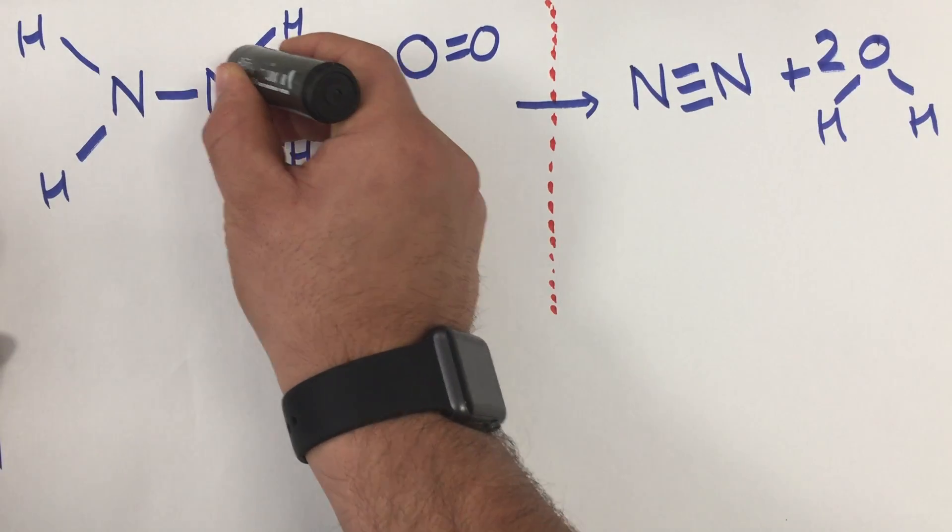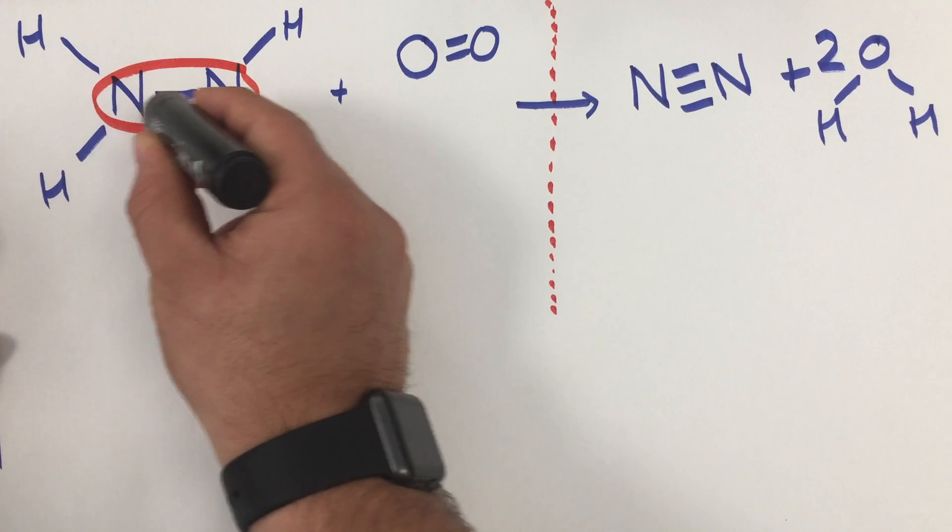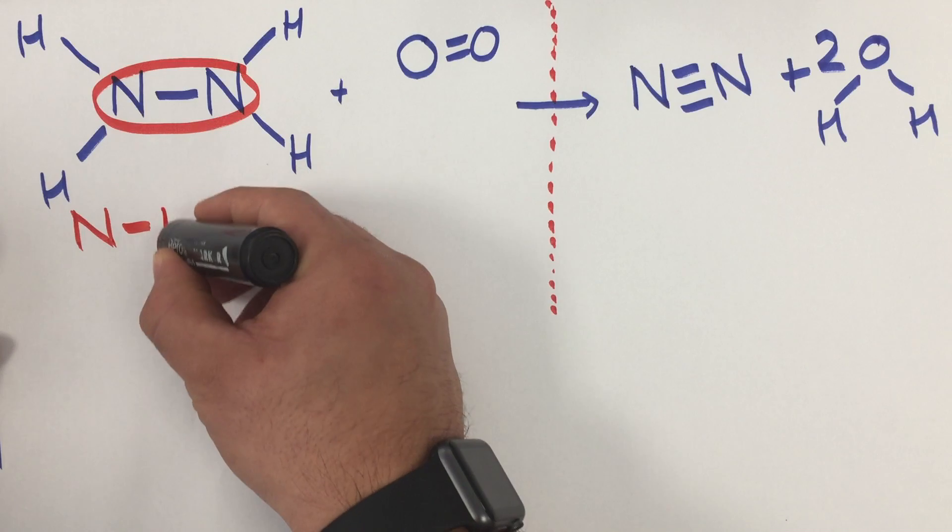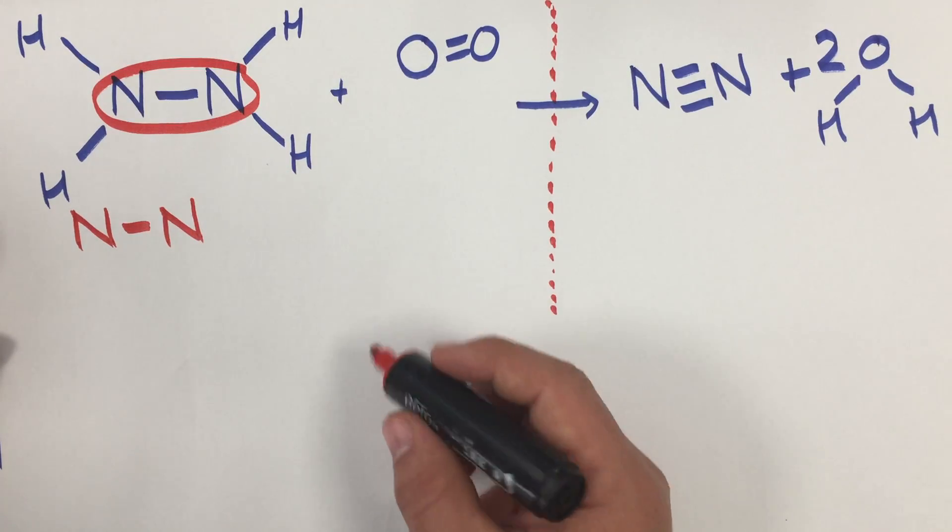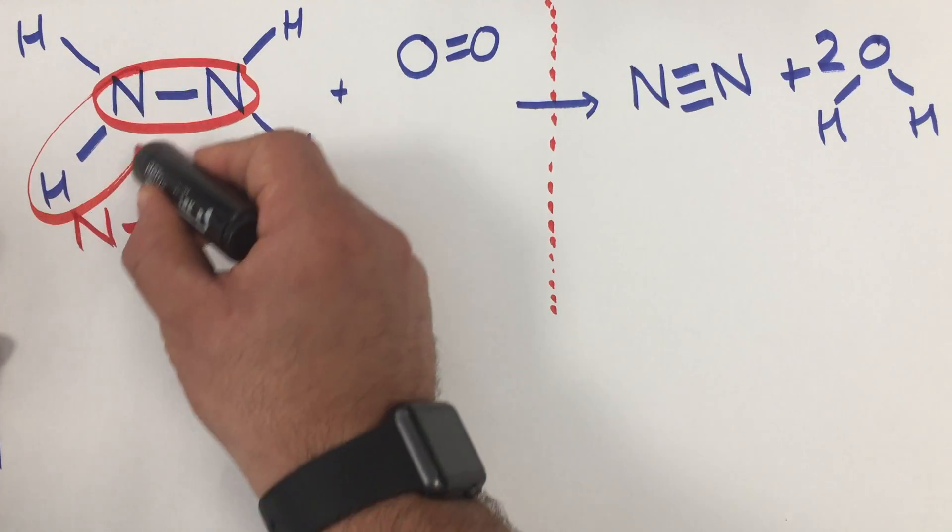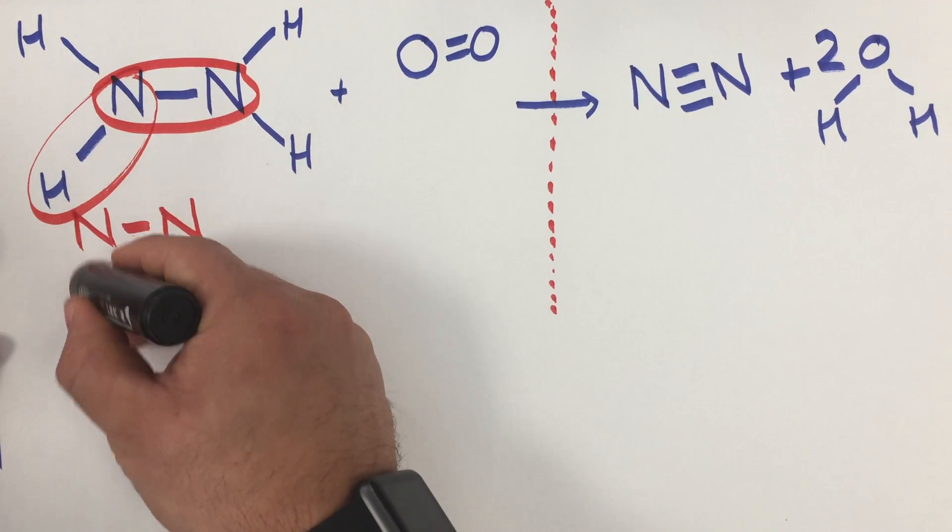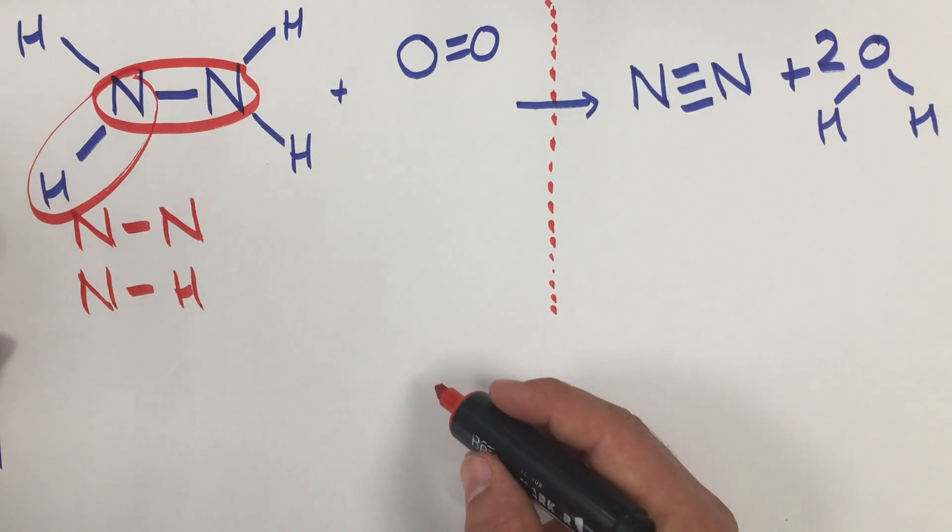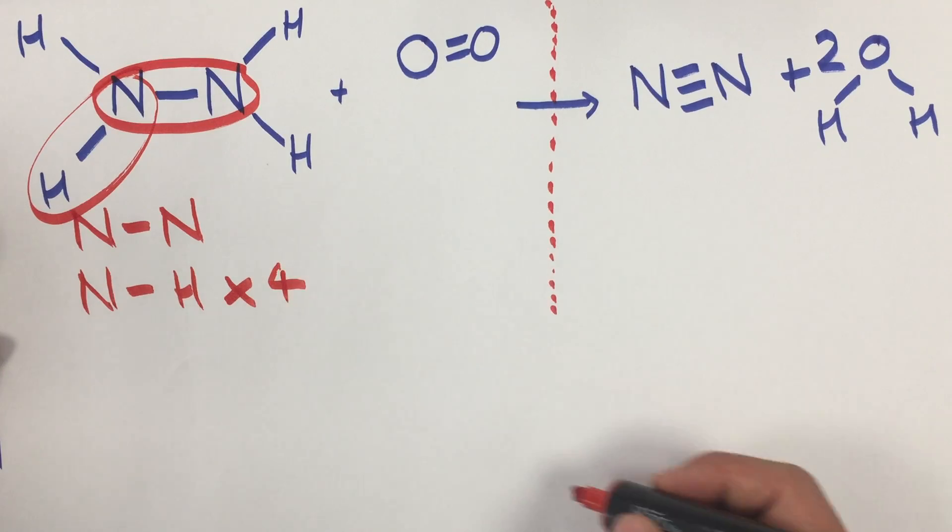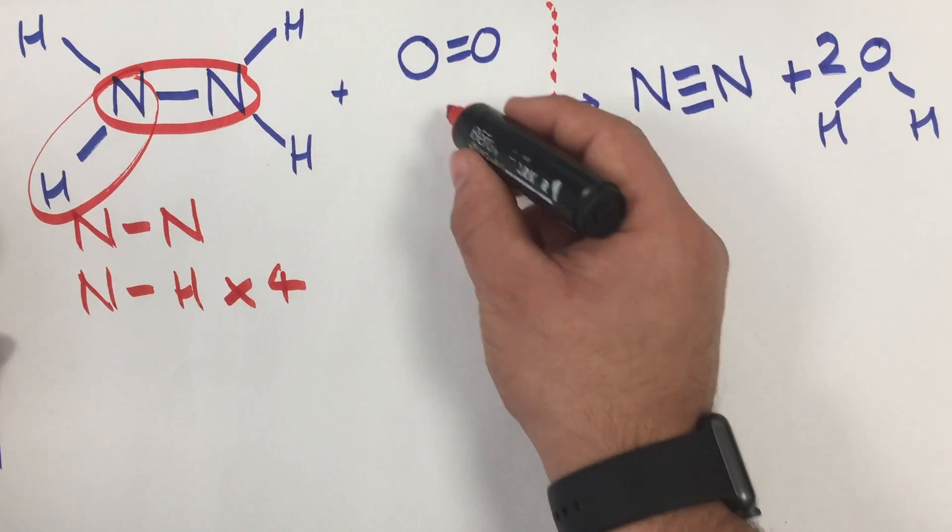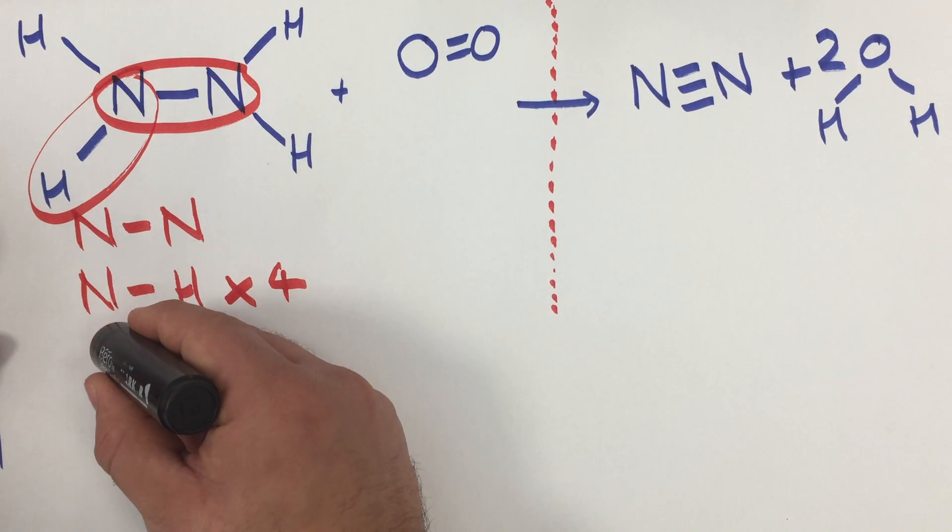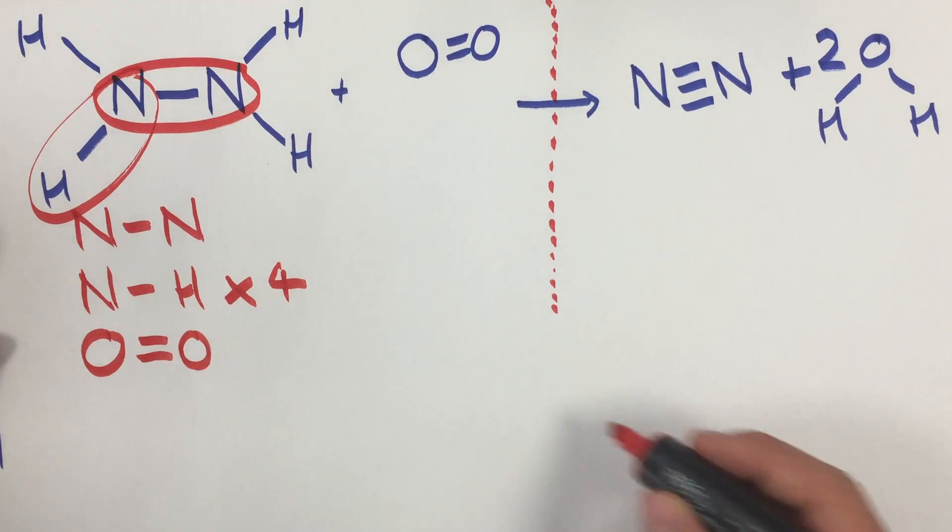First of all, I can see in the center here I have one bond between two nitrogen atoms, so I have a nitrogen-nitrogen bond. And I have four other bonds between a nitrogen and a hydrogen, so I have a nitrogen-hydrogen bond and I have four of those. On this side, I have oxygen and I have one double bond oxygen.